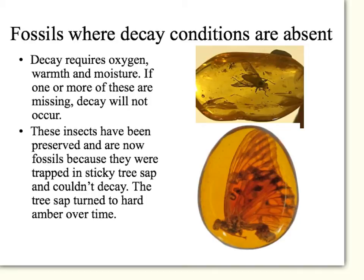This example is where the conditions for decay are not there. Decay requires three things: it requires oxygen, warmth, and moisture. If you're missing one of those things, decay won't occur. We know this from real life because when we preserve food, we either remove the oxygen, the warmth, or the moisture. That's why freezing things works to preserve food, and why drying things out preserves food. We can also change the pH to make it so extreme that the enzymes won't work to decay anything.